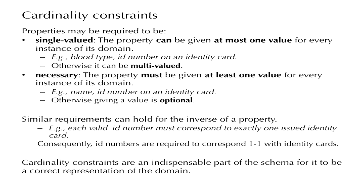We can also have similar requirements for the inverse of a property — that is, the property read the other way around. If an identity card has a field called 'name', the inverse would be: given a name, on which identity cards is that name written? Each valid identity number must correspond to exactly one issued identity card, meaning the inverse is also single-valued and necessary, and therefore identity cards correspond one-to-one with identity numbers.